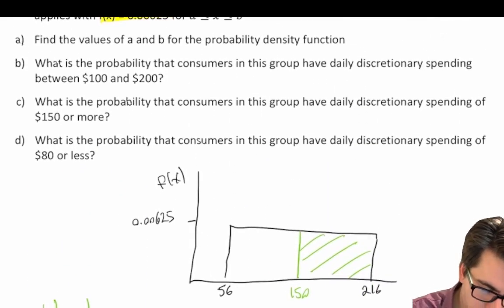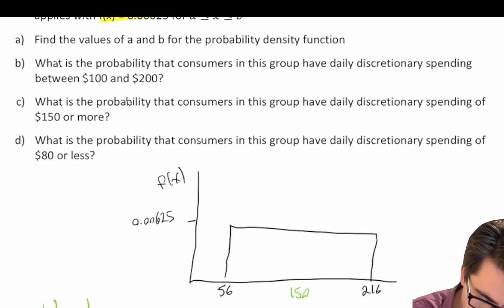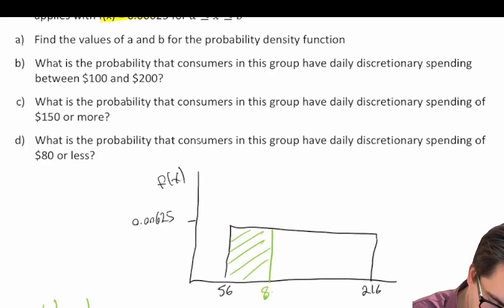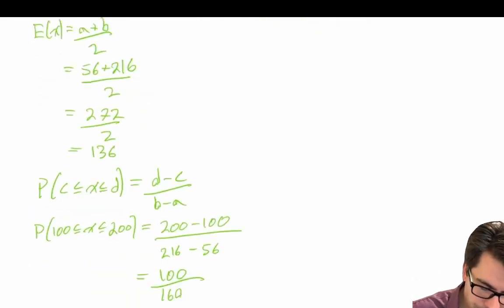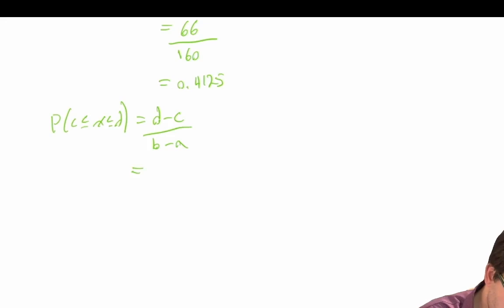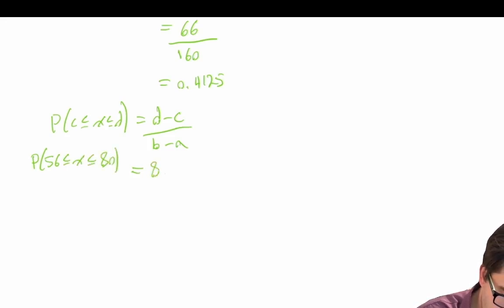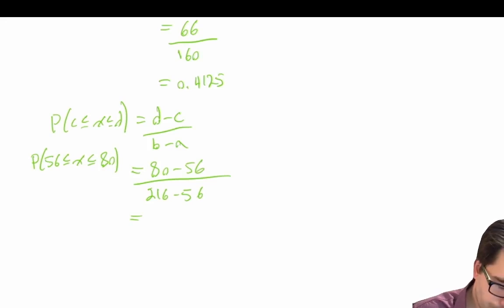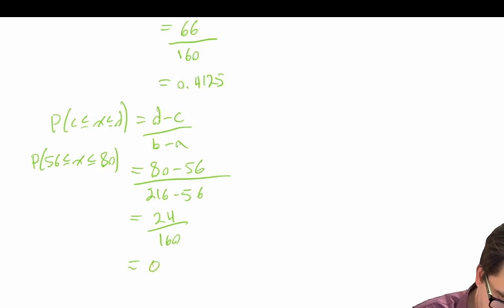And finally, what is the probability that consumers in this group have daily discretionary spending of $80 or less? So $80 or less — what is the probability they fall in this green shaded region? In other words, between 56 and $80. The probability that c is less than or equal to x less than or equal to d is equal to d minus c divided by b minus a. So the probability that 56 is less than or equal to x less than or equal to 80 is equal to 80 minus 56 divided by 216 minus 56, which is equal to 24 divided by 160, which is equal to 0.15.